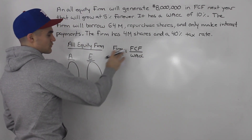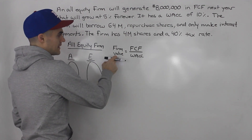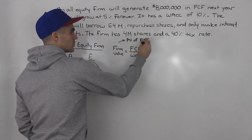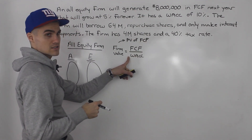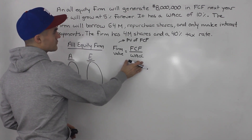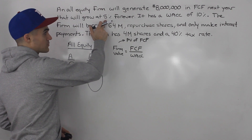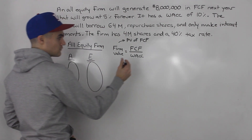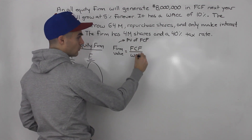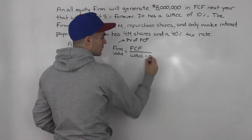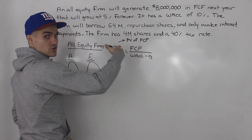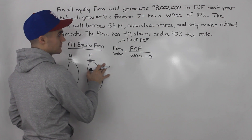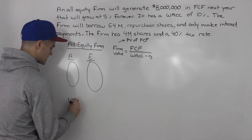That formula assumes the free cash flows are constant. More generally, firm value is the present value of all future free cash flows. In this unit, you'll usually see it as a simple perpetuity. But in this case, the payments grow at 5% forever, so this is a growing perpetuity. The firm value equals free cash flow in one period divided by the weighted average cost of capital minus the growth rate. The WACC is 10% and growth is 5%.